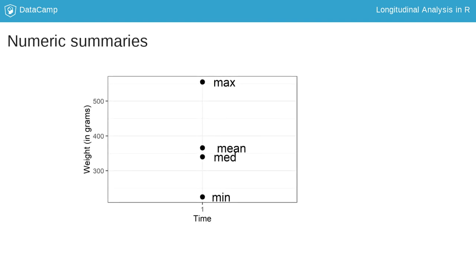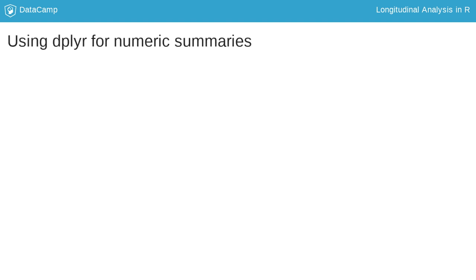Numeric summaries of the data are a great way to explore longitudinal data and include calculating the mean, median, minimum, maximum, and standard deviation of the variable of interest. It is useful to do this overall across all time points, but often these descriptive statistics are most useful when broken down by time or other predictors of interest. The dplyr package from the tidyverse has great tools for exploring numeric summaries. The summarize and group_by functions will be used most frequently.